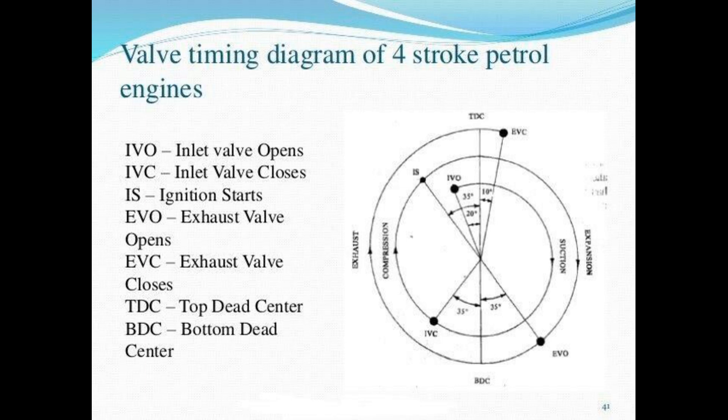The movement of the piston from TDC to BDC is provided with the ideal timing of opening and closing of the intake and exhaust valves respectively. In a four-stroke engine, the cycle completes in four strokes: suction, compression, expansion, and exhaust. The relation between the valves and piston movement from TDC to BDC is represented by the valve timing diagram.